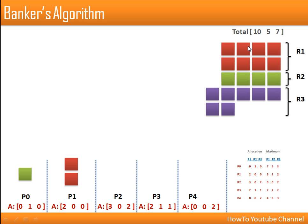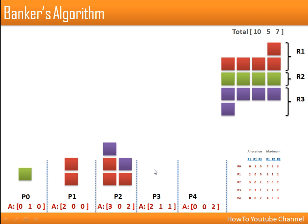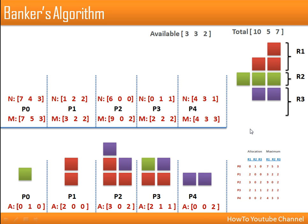Process P1 is having two resources of type R1, so those two resources are allotted to P1. P2 is having three of R1 and two of R3. P3 is having two of R1, one of R2, and one of R3. P4 is having two of R3. After this current allocation, from total resources of 10, 5, 7, we are left with three of R1, three of R2, and two of R3 — so available resources are 3, 3, 2.